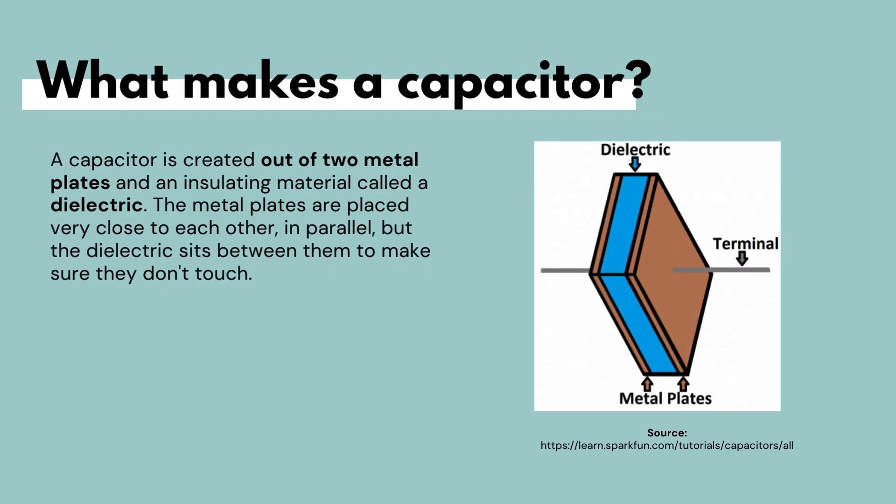A capacitor is created out of two metal plates and an insulating material called a dielectric. The metal plates are placed very close to each other and in parallel, but the dielectric sits between them to make sure that they don't touch.